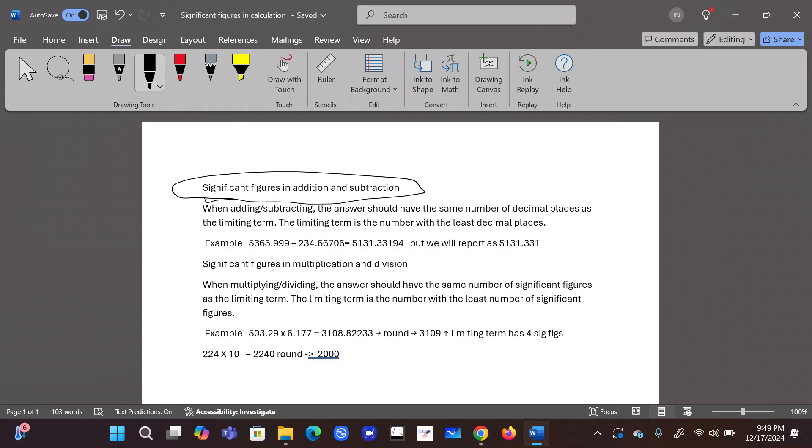When adding or subtracting, the answer should have the same number of decimal places as the limiting term. Limiting term is the number with the least decimal place. For example, we are subtracting 234.66706 from 5065.999. So our answer should be 5131.33194. But the rule says least decimal place. So how many decimal place here?